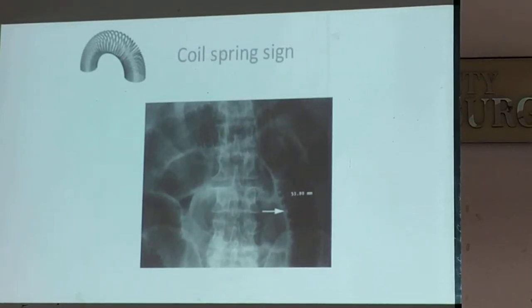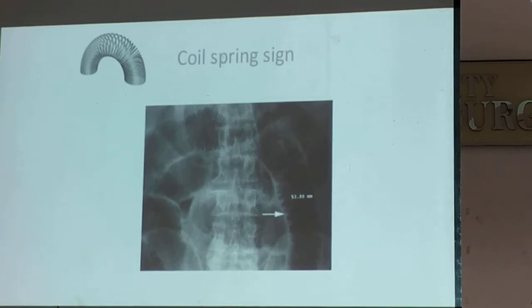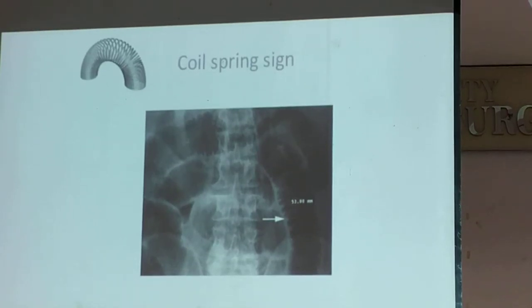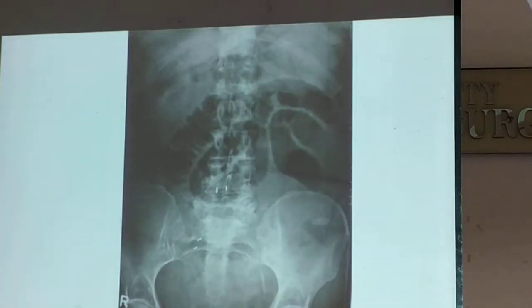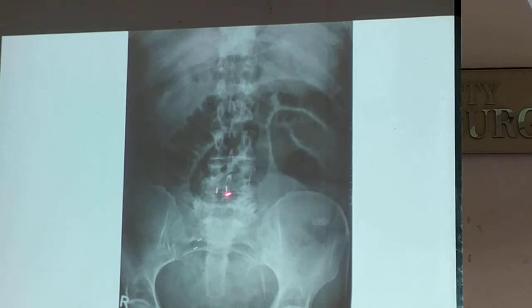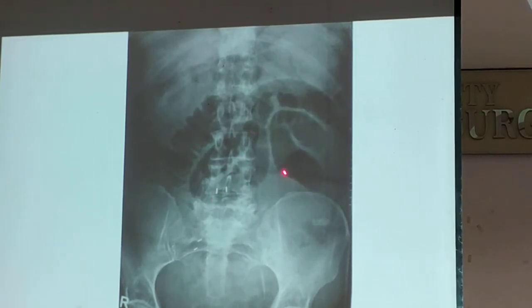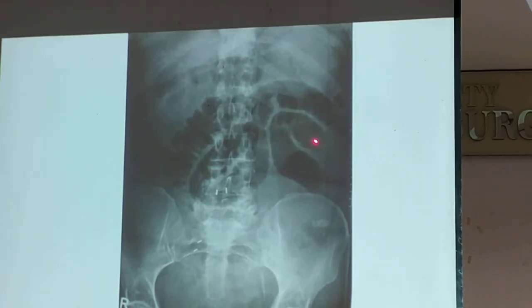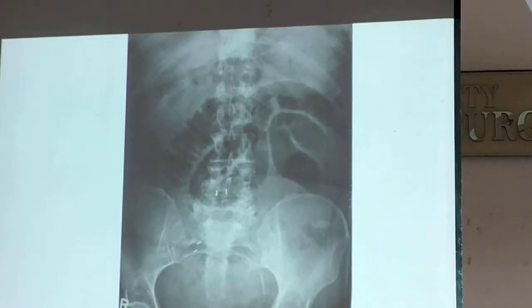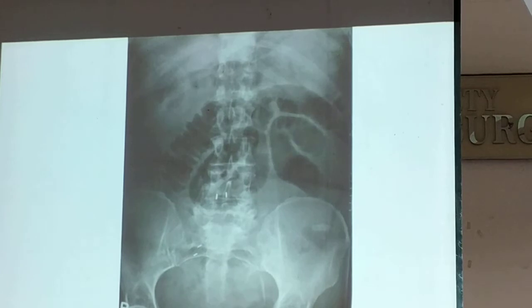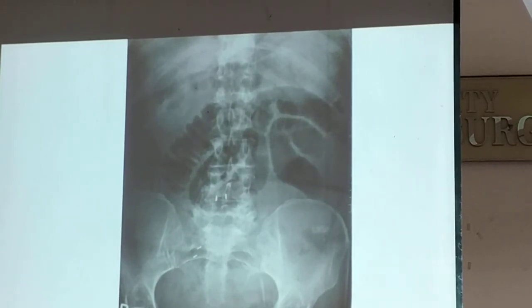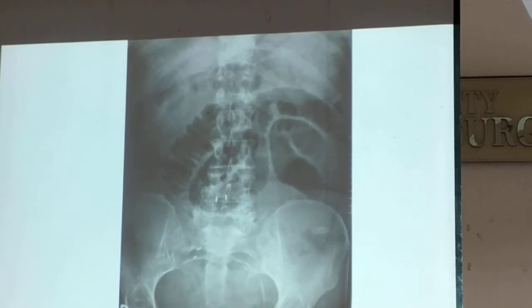That is the typical coil spring sign, seen in small bowel obstruction. This one you could say is the sentinel loop — it is an inverted U-shape. But as I said, this is not pancreatitis. You would observe the coil spring sign here.